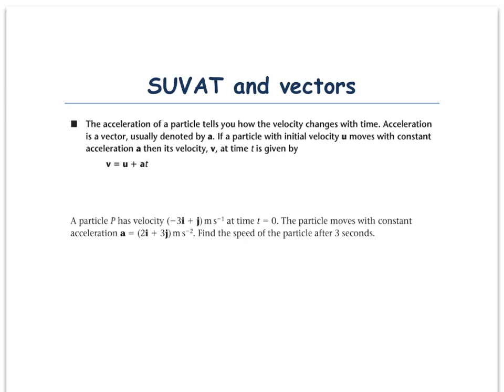If a particle with initial velocity u moves with a constant acceleration a, then its velocity v at time t is given by v equals u plus at. Now this is an equation we use right at the start of the course when we're looking at SUVAT equations.